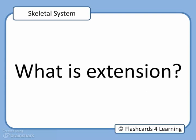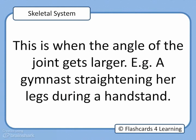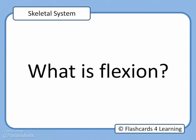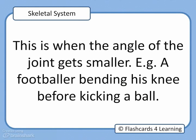What is extension? This is when the angle of the joint gets larger. For example, a gymnast straightening her legs during a handstand. What is flexion? This is when the angle of the joint gets smaller. For example, a footballer bending his knee before kicking a ball.